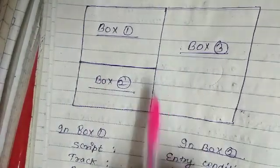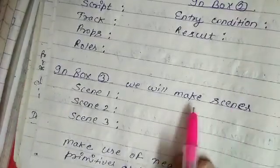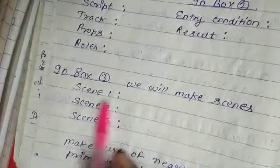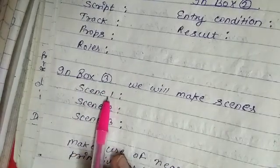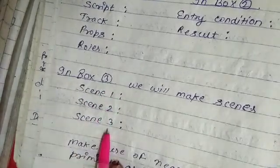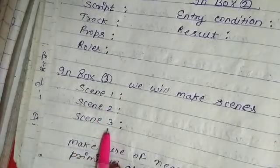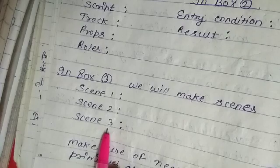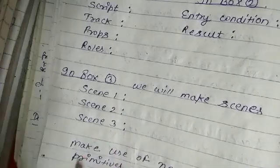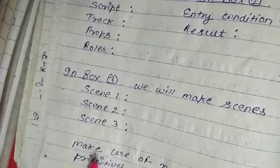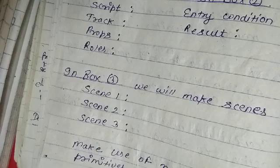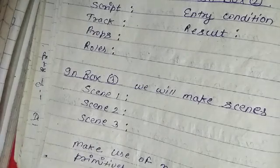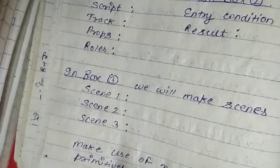In box three, you write script track, props, and roles; then entry condition and result; and then you make the scenes. You can make scene one, two, three, or as many as you choose — minimum three scenes — making use of nearly all primitive actions as much as possible.